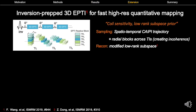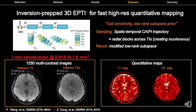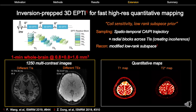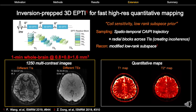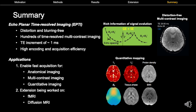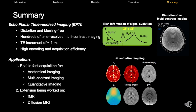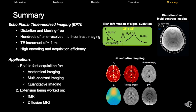We also extend the EPTI concept to 3D sampling for high-resolution quantitative imaging, taking advantage of both coil sensitivity and subspace prior information, allowing whole brain data acquisition at 0.8 x 0.8 x 1.6 mm resolution in just one minute, providing 1250 images across different TIs and TEs together with high-resolution quantitative maps. To summarize, EPTI provides distortion-free, time-resolved multi-contrast imaging at different echo times with high encoding and acquisition efficiency. It enables fast and high-quality anatomical, multi-contrast, and quantitative imaging, and should prove useful for applications such as functional and diffusion imaging.